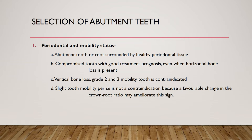Coming to abutment teeth selection: in overdenture, the load lies on the abutment teeth — whichever is present, whether canine or premolar. Bilateral placement is always preferred. The first consideration is periodontal status and mobility: the abutment tooth or root should be surrounded by healthy periodontal tissue. If the PDL is unhealthy, mobility and attachment loss will cause treatment failure. Compromised teeth with good treatment prognosis can be considered even when horizontal bone loss is present.